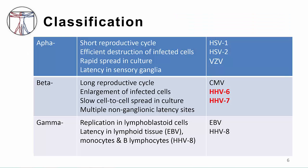HHV6 and 7 are members of the Herpesviridae, or herpesvirus family. They are beta herpesviruses and most closely related to CMV. Like other herpesviruses, HHV6 and 7 become latent and can cause disease when the virus reactivates. These viruses become latent in sites that are not the ganglionic nerve cells, which is in contrast to varicella zoster virus or herpes simplex virus.